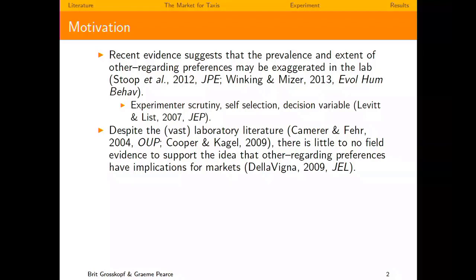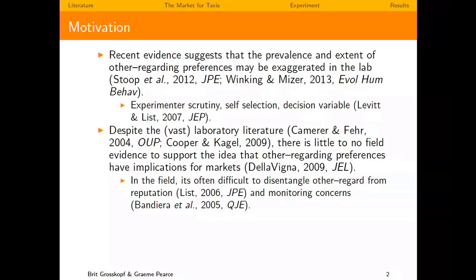One reason why it's very difficult to pin down whether somebody really cares about somebody else in the real world is that reputation is very difficult to disentangle. If you go into a shop and somebody treats you nicely, the shopkeeper might be thinking of you as a prospective future customer. So reputation might make behavior look as if people have other-regarding preferences, when they might actually only be concerned about future interactions.